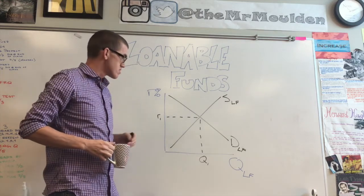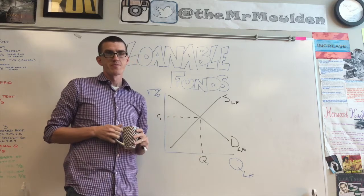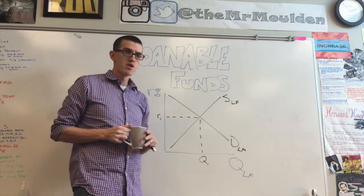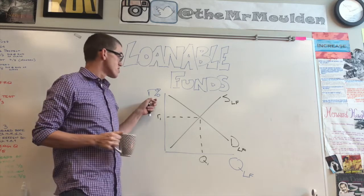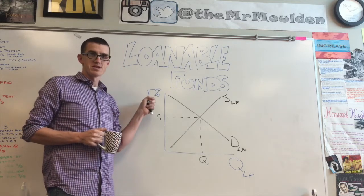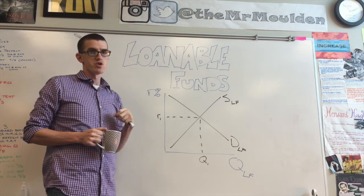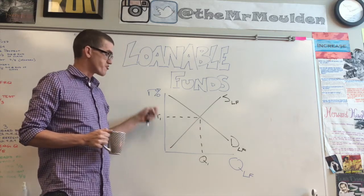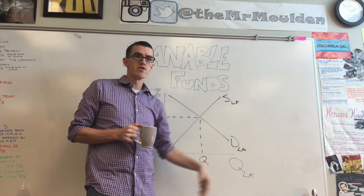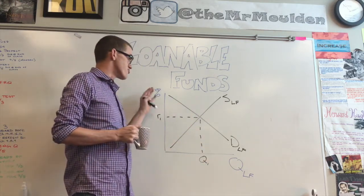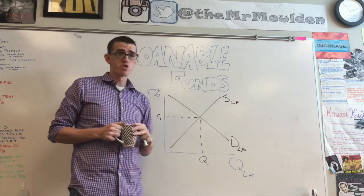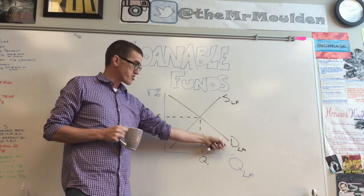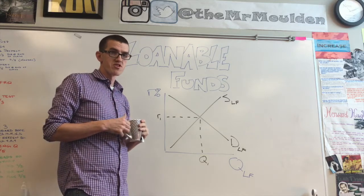The loanable funds market looks like a standard supply and demand graph. Take all the concepts of drawing supply and demand graphs and apply them to this specific market. Our price axis is the real interest rate, because that's what banks charge borrowers and what they pay savers. Quantity is the quantity of loanable funds — how much is available at each interest rate. Demand is downward sloping because consumers don't like high interest rates; as rates decrease, we're willing to take out more loans because money is cheaper.